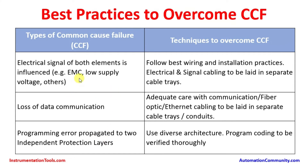Electrical signals of both elements can be influenced if two transmitters share wiring. There may be electromagnetic interference or low supply voltage. To overcome this, follow best wiring installation practices: electrical and signal cabling should be laid in separate cable trays.